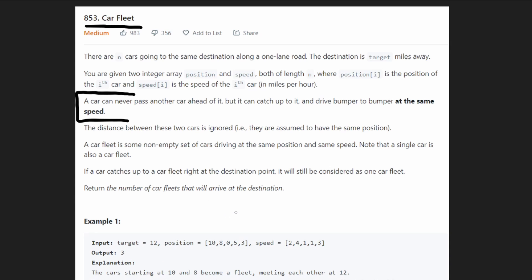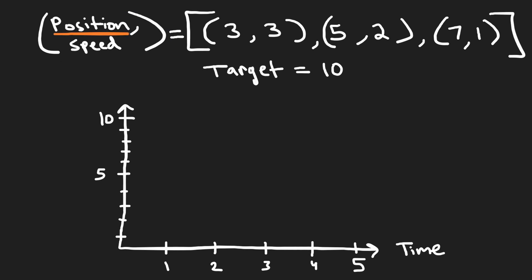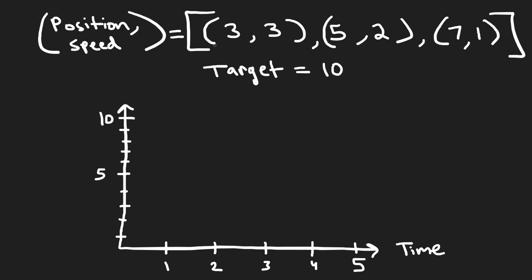Now let's figure out how we can actually solve this problem. I'm combining the two arrays given into an array of pairs — the first value is position, the second is speed. So we have position 3 speed 3, position 5 speed 2, position 7 speed 1, and our target in this case is 10.